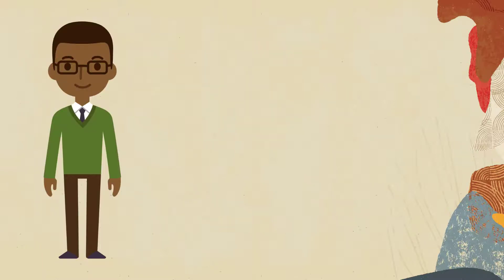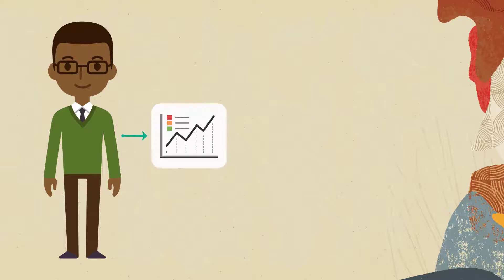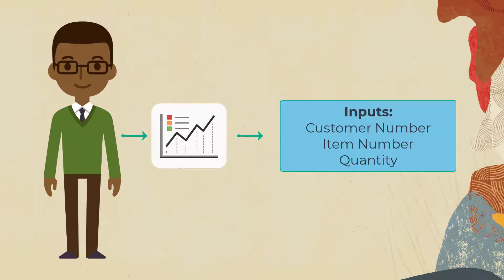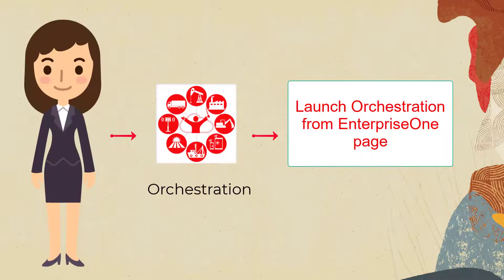Sometimes Rosie's users need to create very simple sales orders. The inputs are just a customer number, an item, and a quantity. Rosie creates an orchestration to do the work and an Enterprise One page where the user can launch the orchestration to create the sales order with just a few clicks.